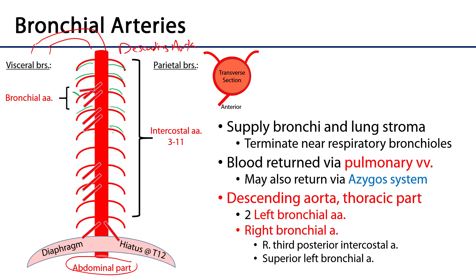These bronchial arteries are going to supply the tracheobronchial tree out to about the level of the respiratory bronchioles, so they don't reach the capillary beds surrounding the alveoli and do not participate in gas exchange. They are strictly there to supply the bronchi and the tracheobronchial tree, as well as some of the connective tissue — the stroma of the lung.